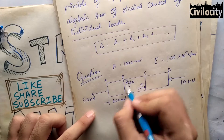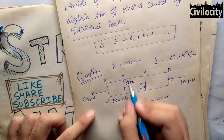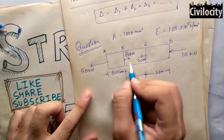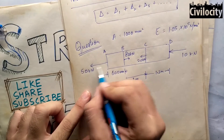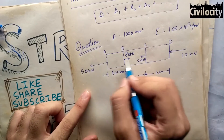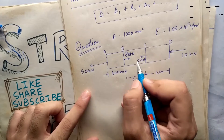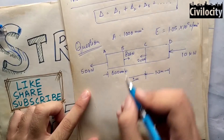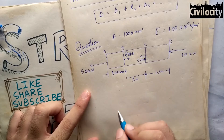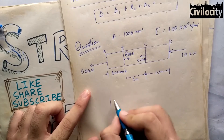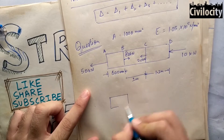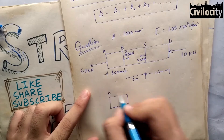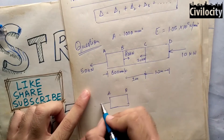Starting from section AB: section A has 50 kN and section B has 80 kN. To keep AB stable, if A has 50 kN then B needs 50 kN to balance it — so 50 kN is the internal tensile force in AB, and the remaining 30 kN carries over. So AB has a 50 kN tensile force and 30 kN will remain for the next section.